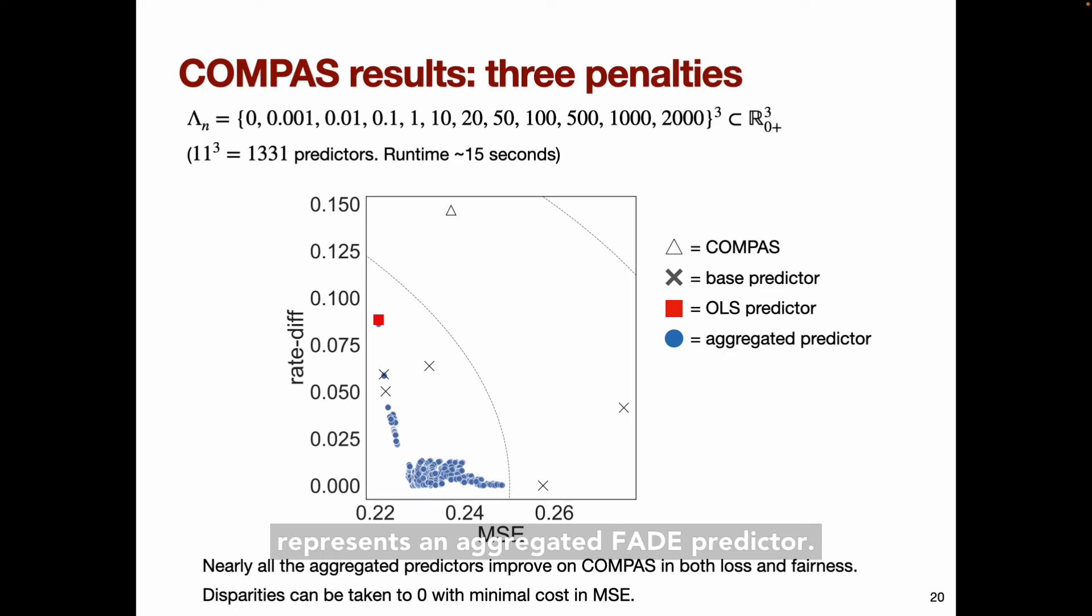So there are 1,331 of them, but many of them substantially overlap in this space. And the gray contour lines represent radii around the origin. As expected, the OLS predictor has the smallest mean squared error. Some of the base predictors have smaller mean squared error than COMPAS, and they all have smaller rate differences. The majority of the FADE predictors improve on COMPAS with respect to both measures.